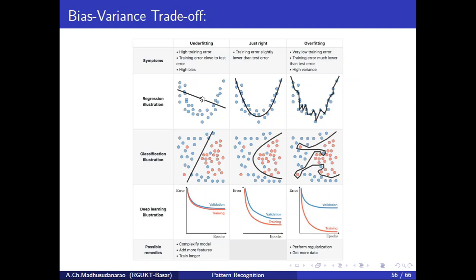When the model is under-fitting your data, you are going to see high training error. This line is not fitting the data very well, so you are going to get high training error. Your test error will also be very high and almost the same as your training error.